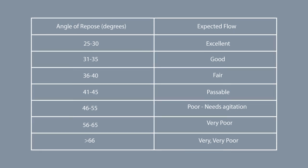Here is a table of how the angle of repose relates to the powder's ability to flow. An angle between 25 and 30 degrees indicates excellent flow, meaning the formulation will move through your hopper, feed frame, die table, and die bore smoothly.